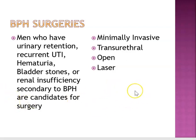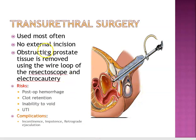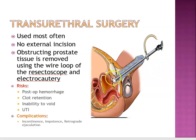Transurethral surgery is called TURP — transurethral resection of the prostate — and it's the more common procedure. A device is inserted through the urethra, removing the obstructing tissue one piece at a time. The tissue is flushed through the bladder with fluid and then flushed out at the end of the operation. This is a lot less invasive than the open surgeries used in the past.